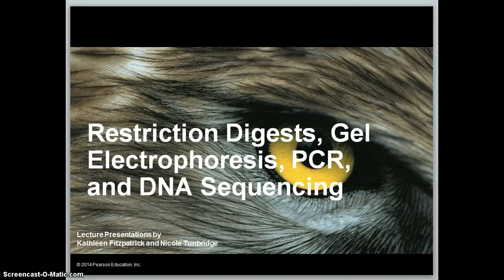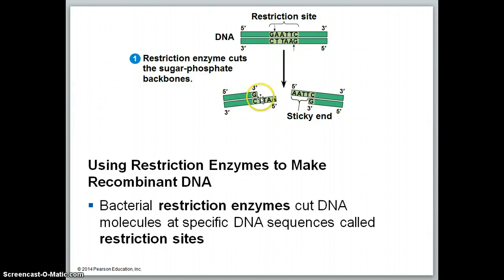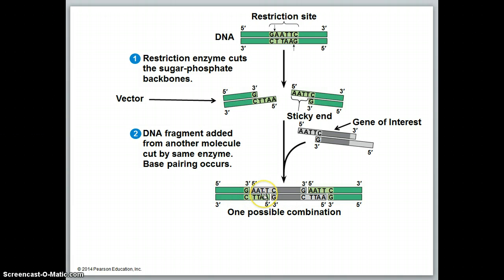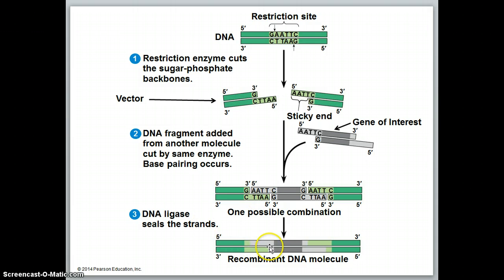This is a presentation on restriction digest gel. Note that there are sticky ends on the DNA that is cut. Once you cut your vector with restriction enzymes — our vector would be like a plasmid that's able to transport new DNA inside a bacterium — we can also cut a gene of interest out with the same restriction enzyme so our sticky ends match up, and we can place that gene of interest into our plasmid. This will be attached together with DNA ligase to make one complete sequence of DNA.